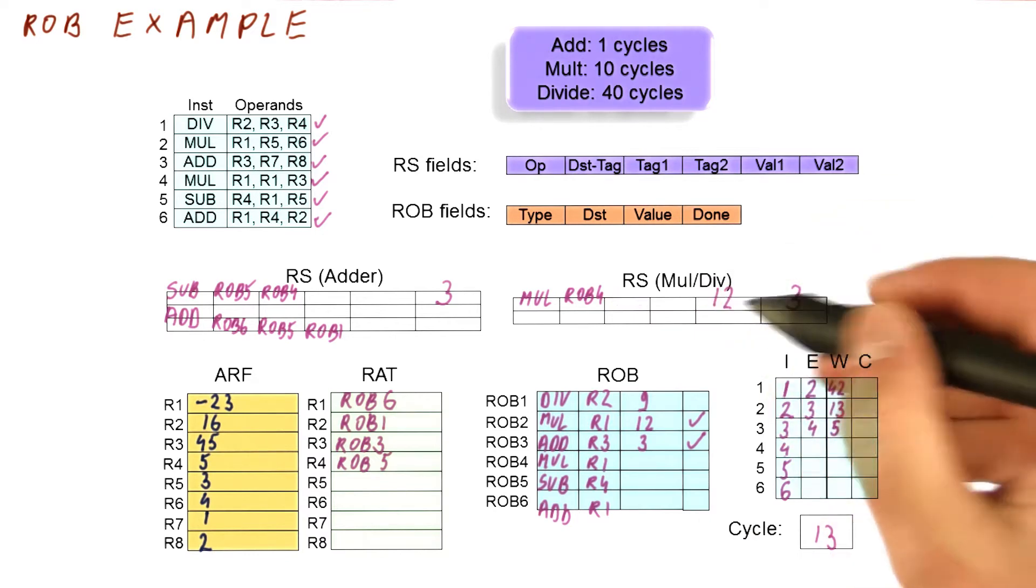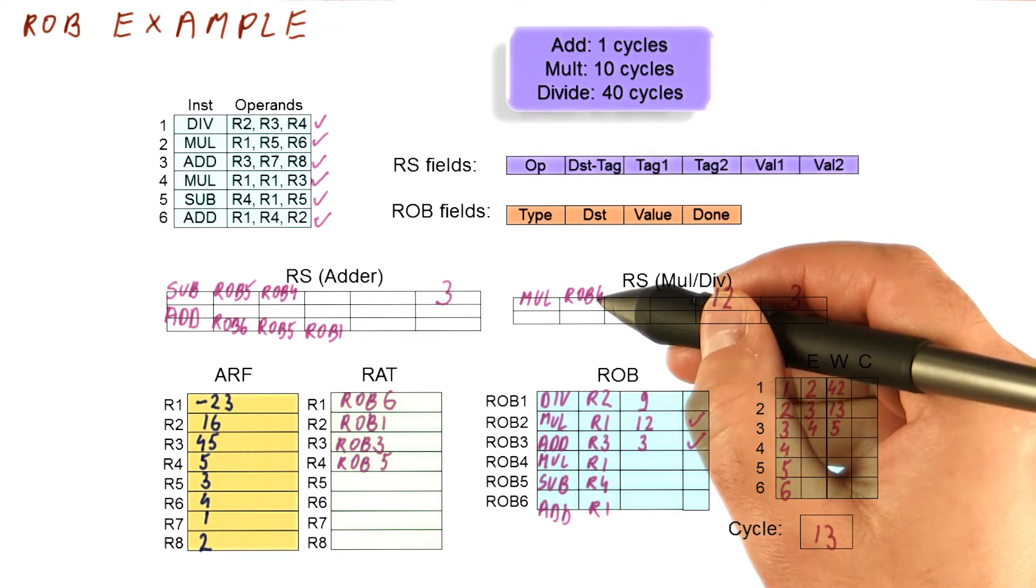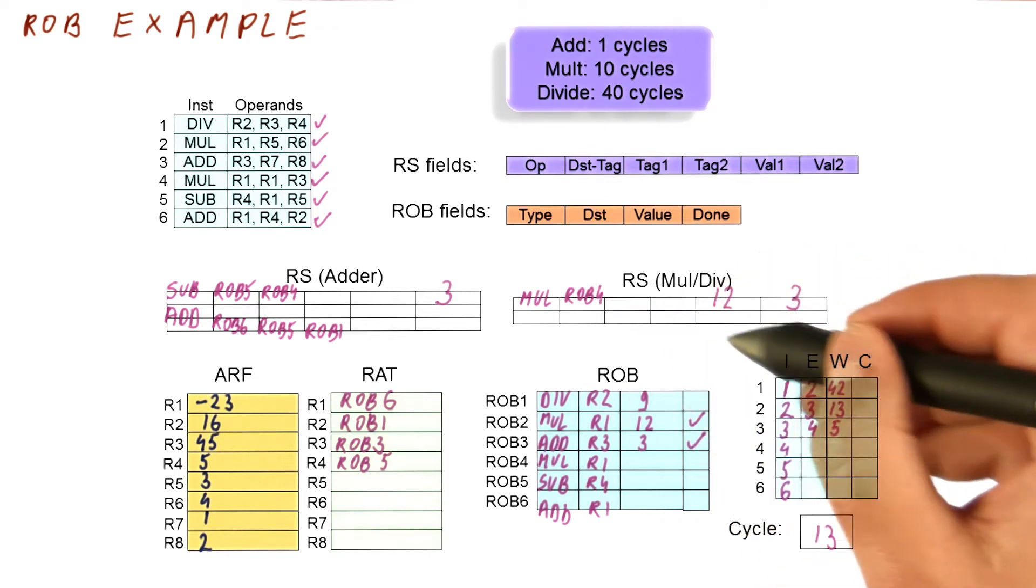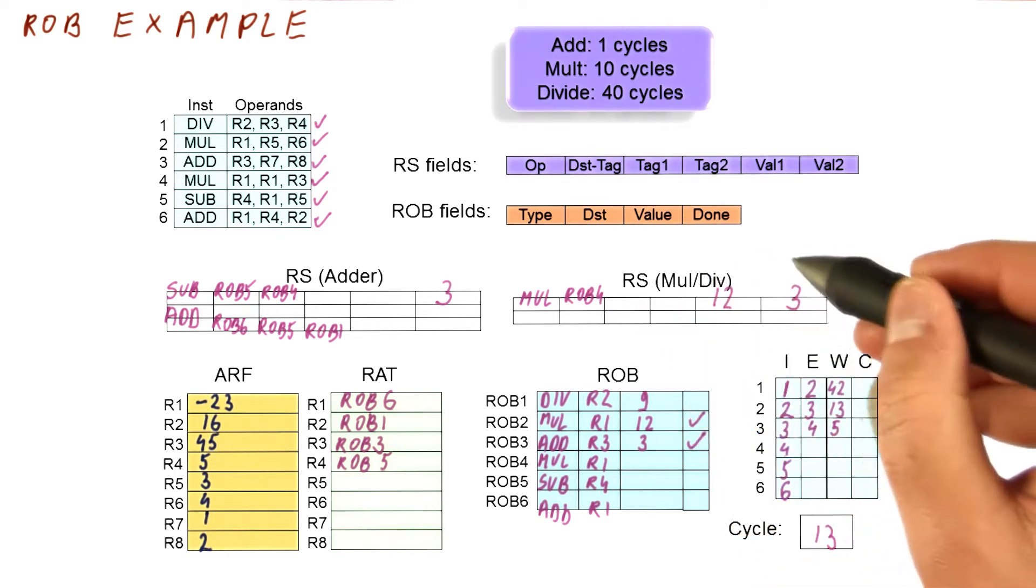So this instruction, which is the rob4 instruction, is no longer waiting for anything. It can actually dispatch in this cycle 13.